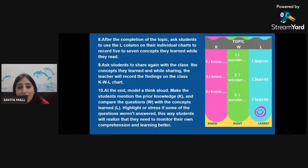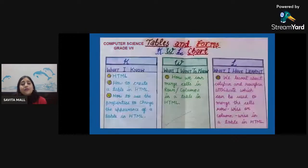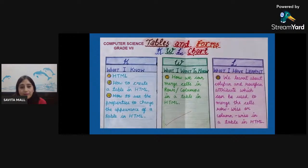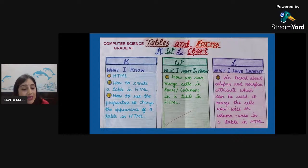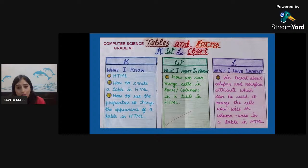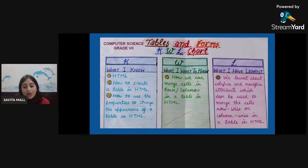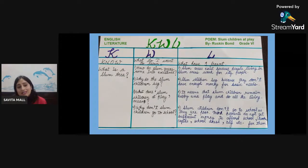Now let us see a few examples. This graphic organizer is for computer science, grade 7 — the topic is HTML. The students already had some prior knowledge: how to create a table in HTML, how to use properties to change the appearance of a table. They wanted to know how to merge cells in rows and columns in a table in HTML, and after the topic was completed, the students wrote their answers. The next example is English literature — the poem 'Slum Children at Play' by Ruskin Bond, grade 6. Before reading the poem, students only knew what a slum area is, but they had many questions, and after completion they wrote their answers.